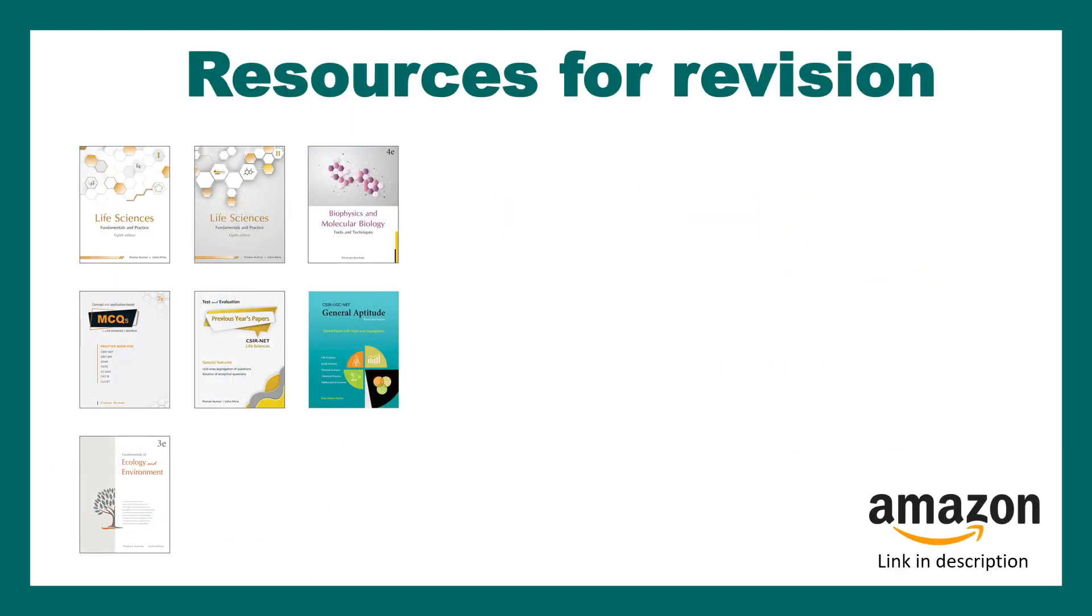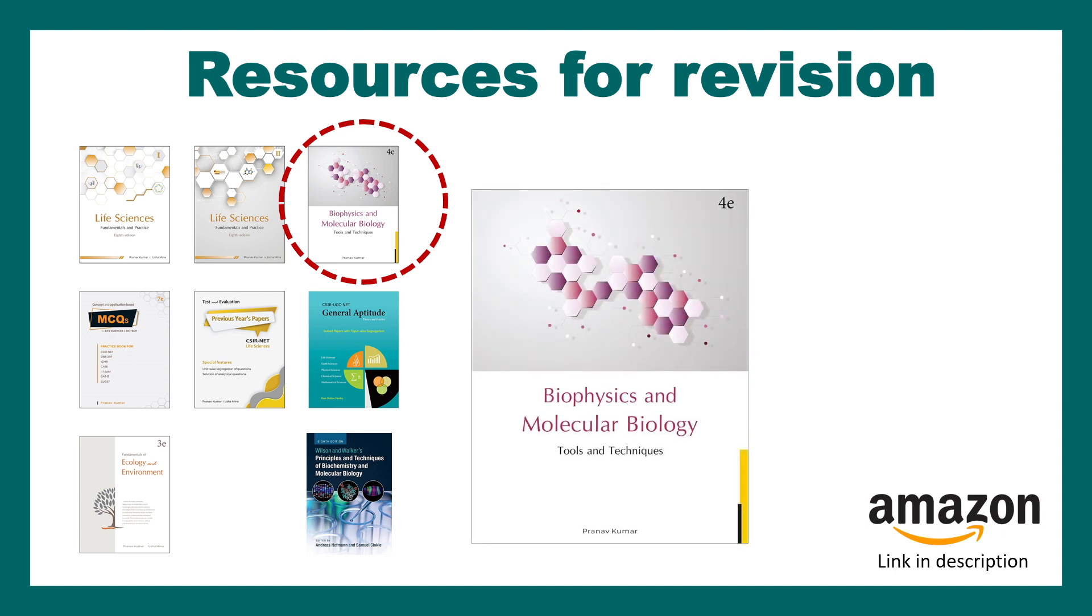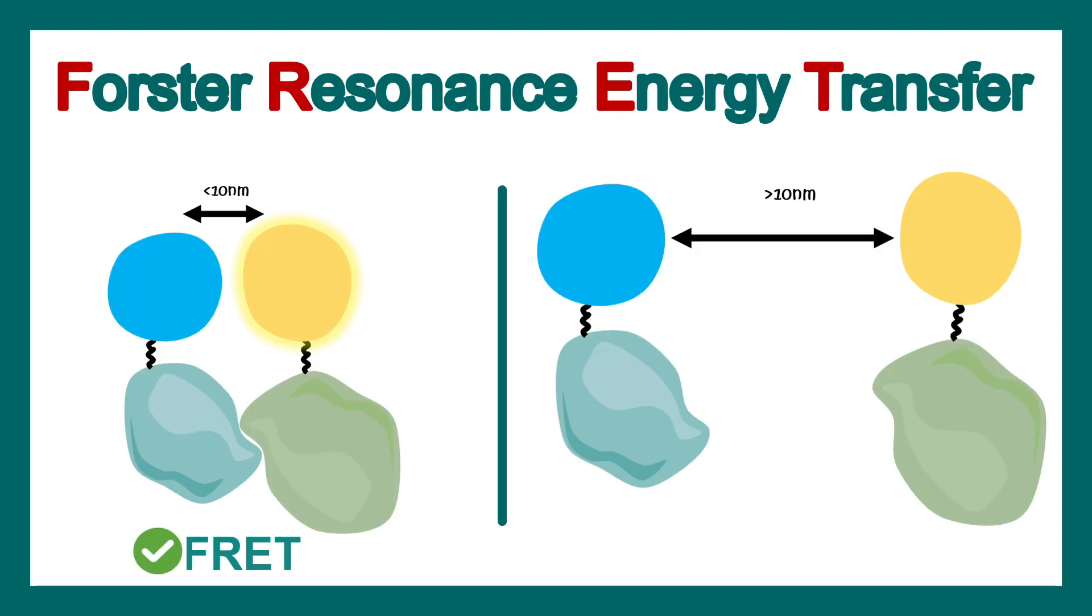So in terms of resources, you can use Pathfinder's life science book sets. This particular concept could be found in the Biophysics and Molecular Biology book. Alternatively, Wilson and Walker's book is also good for these purposes. If you want further information, the Nikon Microscopy U website could be good. The easiest and most precise way to revise this is using this particular book, included in Chapter No. 6, Page No. 89. All the links and Amazon links are provided in the description.